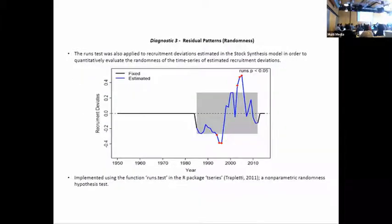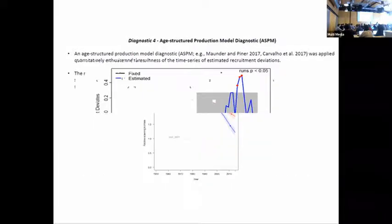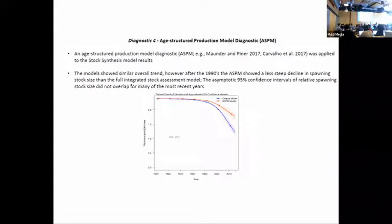You can apply these to the recruitment deviations, although in this case you'd often expect that there would be non-random patterns in your recruitment, but it can help you quantitatively identify them. In this case this is for a shortfin mako which would not be expected to have high recruitment variability, so some of the points being significantly lower in the past and higher in more recent years is problematic. So this is a warning sign for this assessment.